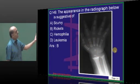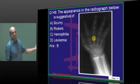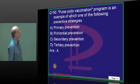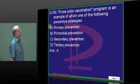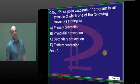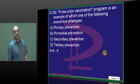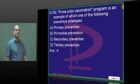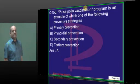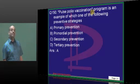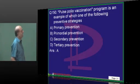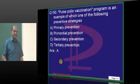A typical rickettsial radiograph was given and asked to be recognized. Pulse polio is an example of primary prevention, not primordial. Primordial means even before the emergence of risk factors. If there were any vaccination available in the fetus, then you could call it primordial.